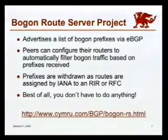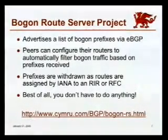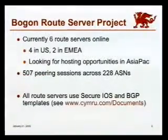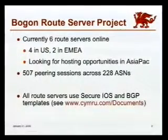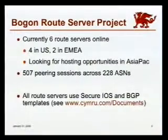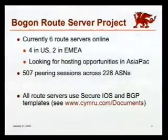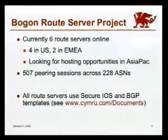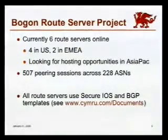You can read all about the project at our webpage, cymru.bgp.bogon.rs. We currently have six route servers online — four in the US, two in Europe — with a seventh coming online very soon, and a second European one as well. Thanks to a recent donation, we're going to have Internet2 presence in the near future. One place we're notably lacking is Asia-Pacific, so if you're interested in helping out and can donate rack space and an IP address, we'd love to talk to you.